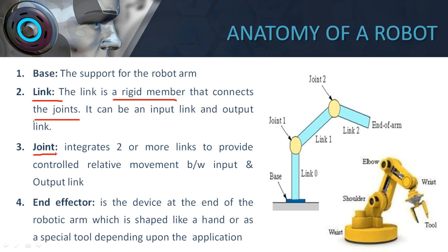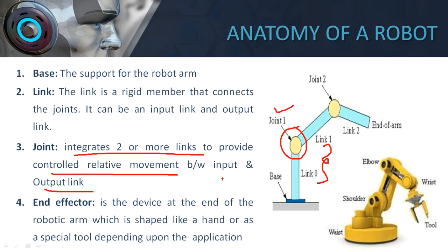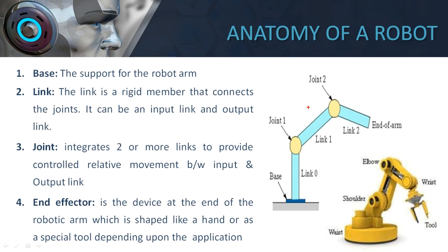Likewise, the robot also has certain links which are integrated by joints. Links and joints are very important to understand. They are named link 0, link 1, and link 2. How are link 1 and link 0 integrated? They are integrated by a joint between them. A joint integrates two or more links to provide controlled relative movement between the input and the output link. The links are counted from the base — link 0 is the input link and link 1 is the output link, connected by joint 1. There are different types of joints which we will cover shortly.